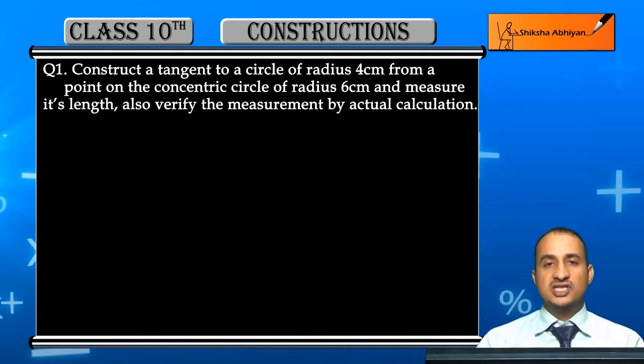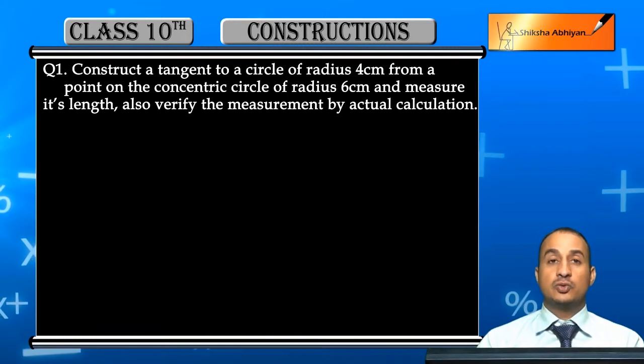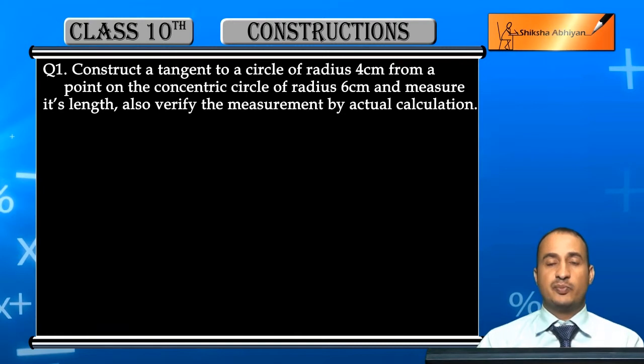Aap ko ek 4 cm wali circle per tangent draw karna hai aur wo tangent is point par ho, ek usi ke concentric circle jis ka radius 6 cm hai us circle ke point par ho, aur uske baad is tangent ki length ko measure bhi karna hai.